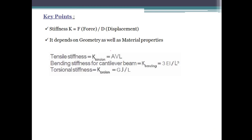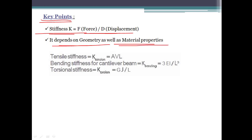Key points: stiffness is force divided by displacement, and it depends on the geometry as well as material properties. These are the formulas you can remember for your hand calculations. This is all about stiffness. Thank you for listening.